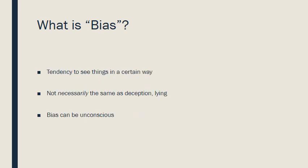When we think about bias, it's the tendency to see things in a certain way — to interpret the world, people, and situations in a certain way. We all have biases because we all have our own experiences. Bias is not necessarily the same thing as deception or lying. A biased study doesn't necessarily mean it's deceiving you. It's generally just the framing of issues towards a certain tendency, and bias can be unconscious.